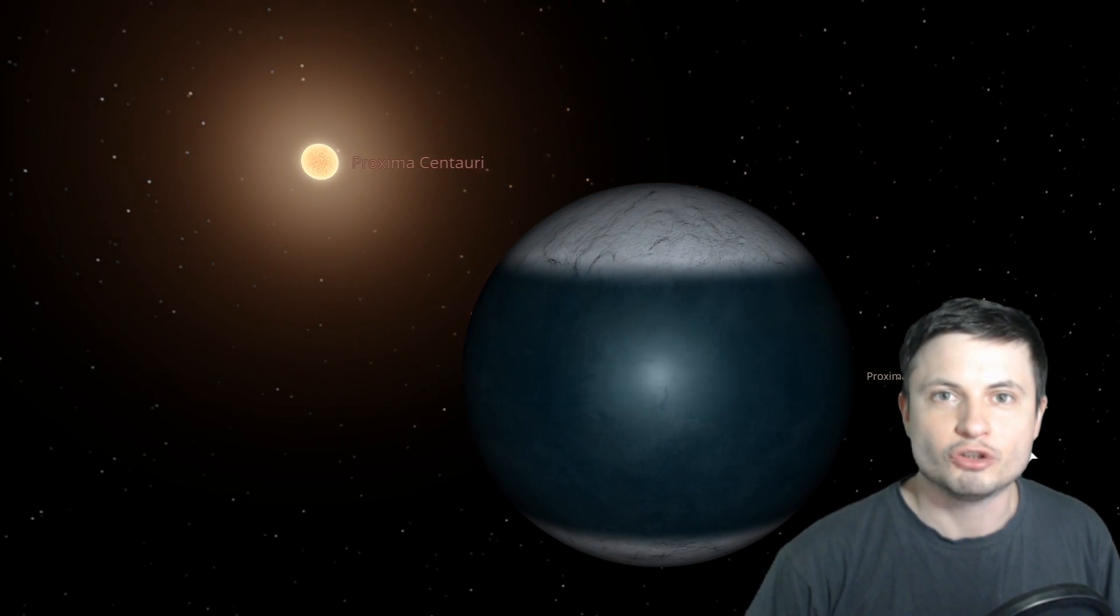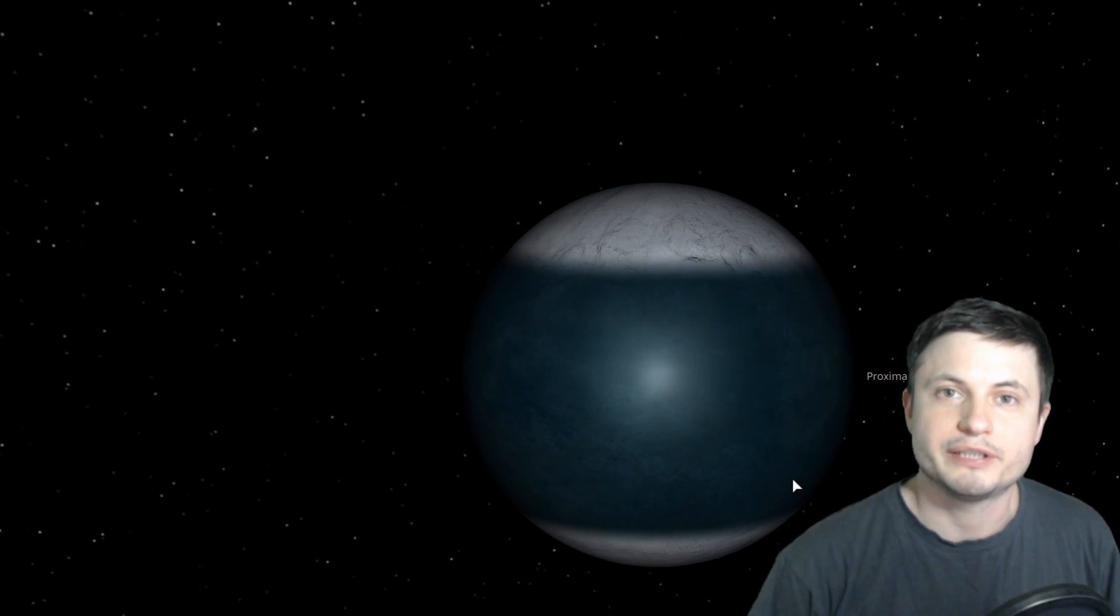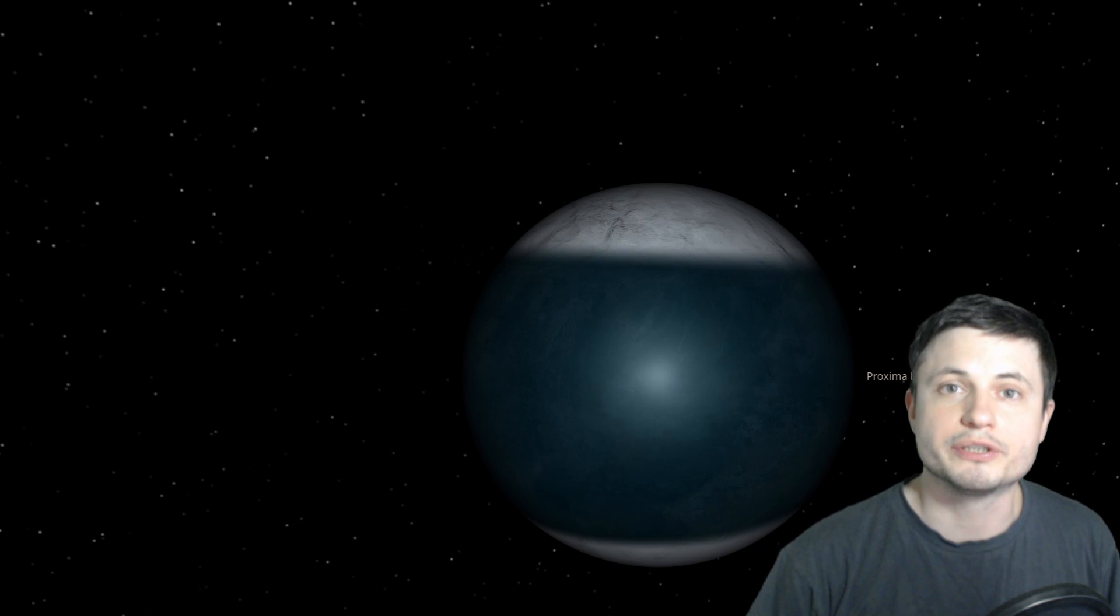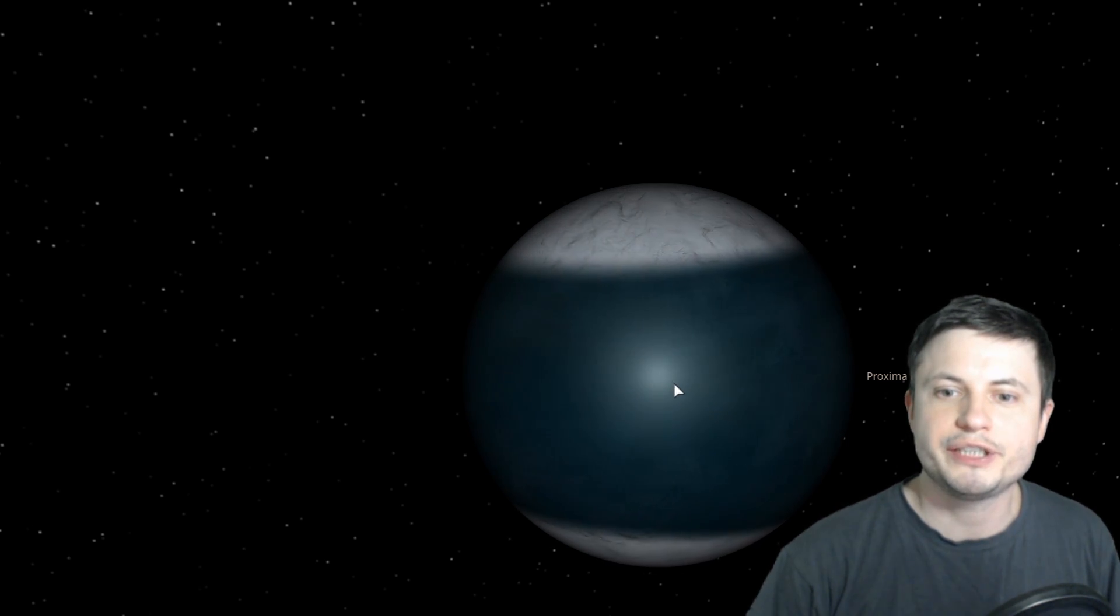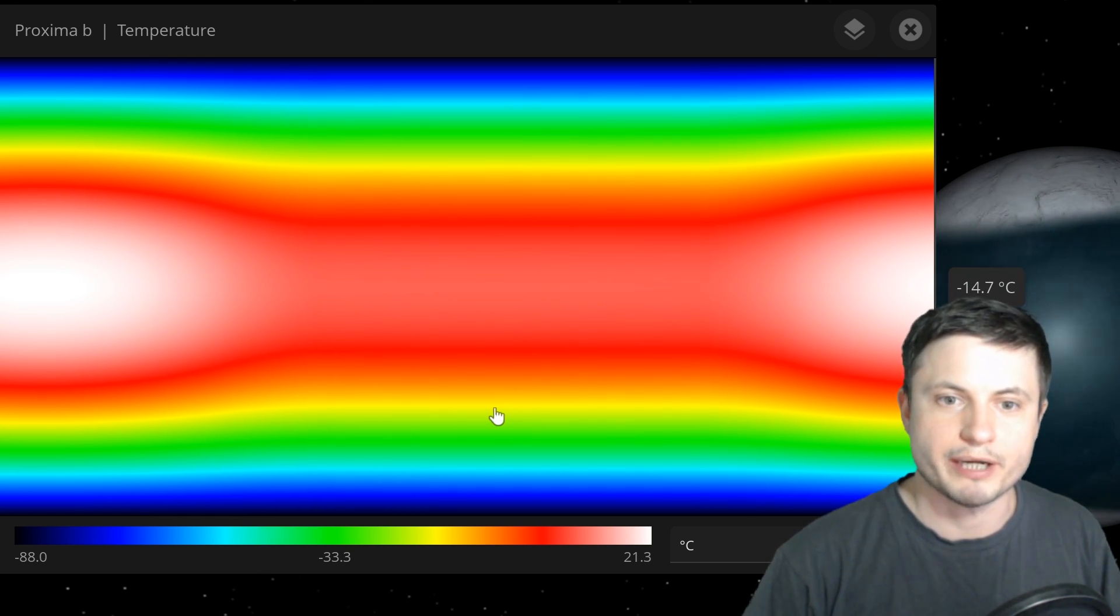This planet will start acquiring a very typical eyeball shape. It's going to have one side almost entirely covered in ice, and then the other side is going to have essentially liquid water. We can even see how this transforms in real time by looking at the surface temperature graph.